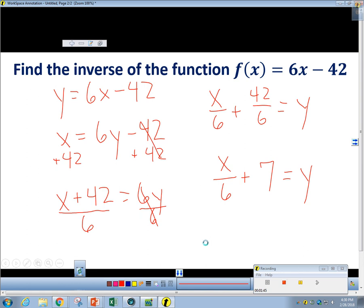And again, when this little wheel stops spinning, we can write it with the inverse symbol to make it formal and official. So f negative 1 of x equals x over 6 plus 7. There you go.